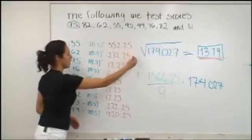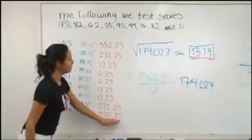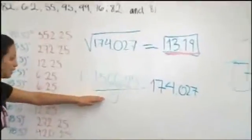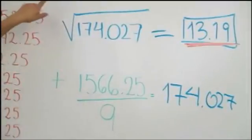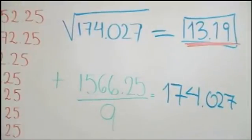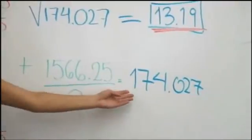We add all these squared differences up to get 1566.25, then divide by nine, which is the number of test scores. The result is 174.027.